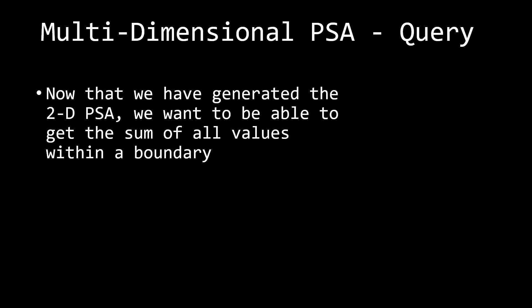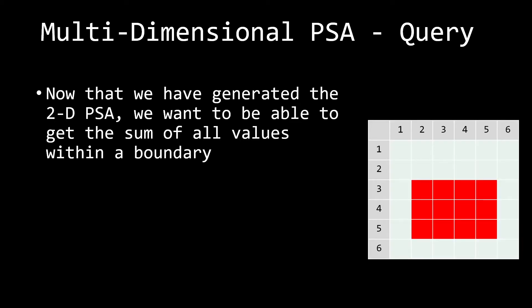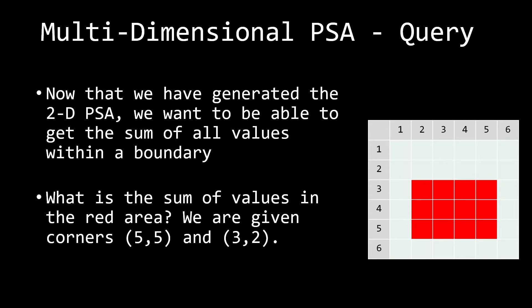Now that we've generated the prefix sum array, how do we query the sum of a specific rectangular region? Say we want the sum of all values in the red area, given the top-left corner (r1, c1) = (3, 2) and the bottom-right corner (r2, c2) = (5, 5). How do we compute the sum within this specific range?